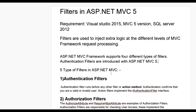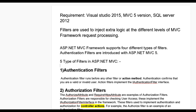Let us see the five types of filters in ASP.NET MVC. First one is authentication filters. Authentication filters run before any other filter or action method. Authentication confirms that you are a valid or invalid user. Action filters implement the IAuthenticationFilter interface.